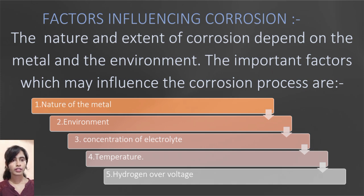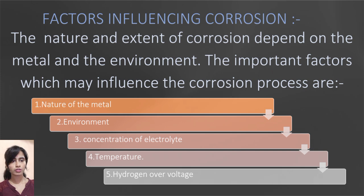These are the factors influencing corrosion. The nature and extent of corrosion depends on the metal and the environment. The five major factors which may influence the corrosion process are: first, nature of metal; second, environment; third, concentration of electrolyte; fourth, temperature; and fifth, hydrogen overvoltage.